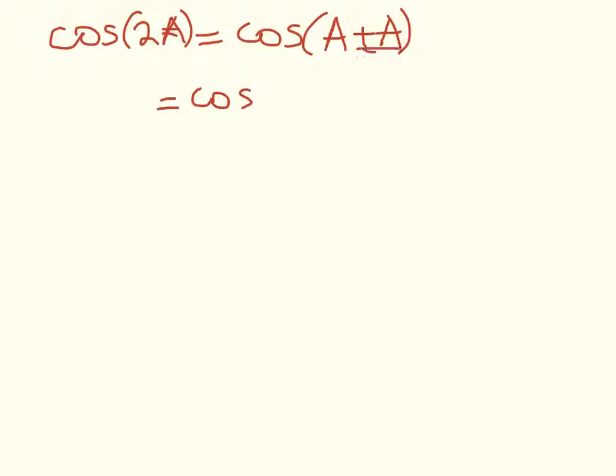Now, the next step is that we'd like to find a formula that lets us work with cos 2A. Well, this turns out to be really easy. Cosine of 2A is just cos A plus A. Now, we know the formula for cos A plus B. So all we're doing is substituting in A for B. So we have cos A, cos A, minus sin A, sin A.